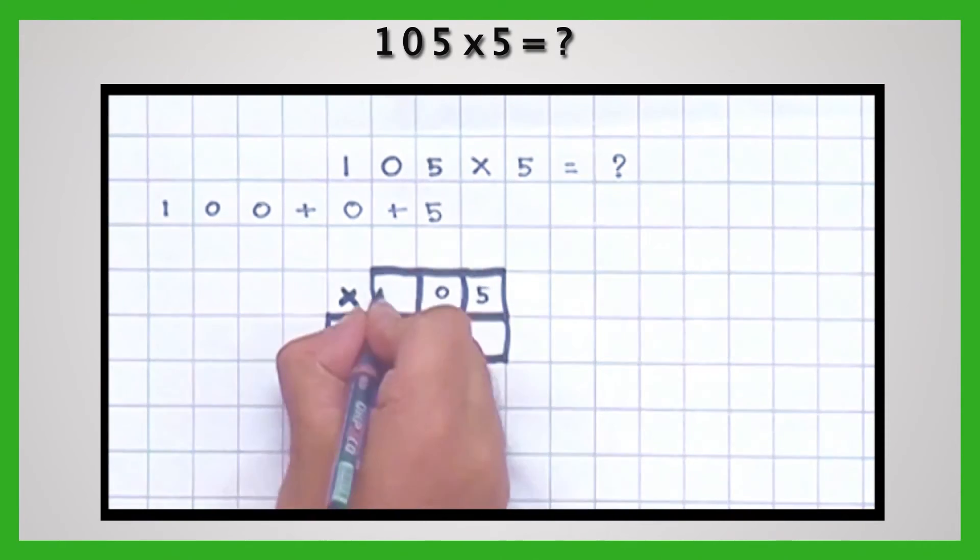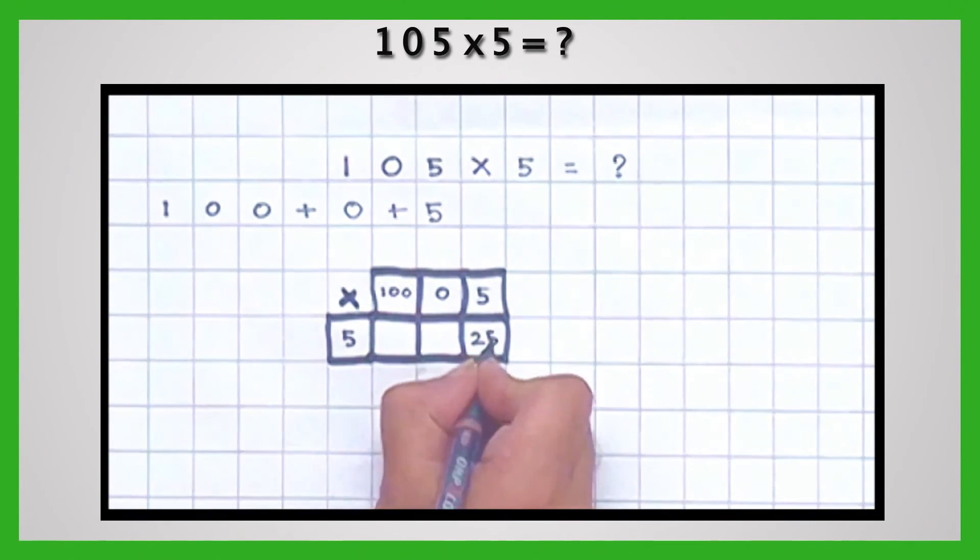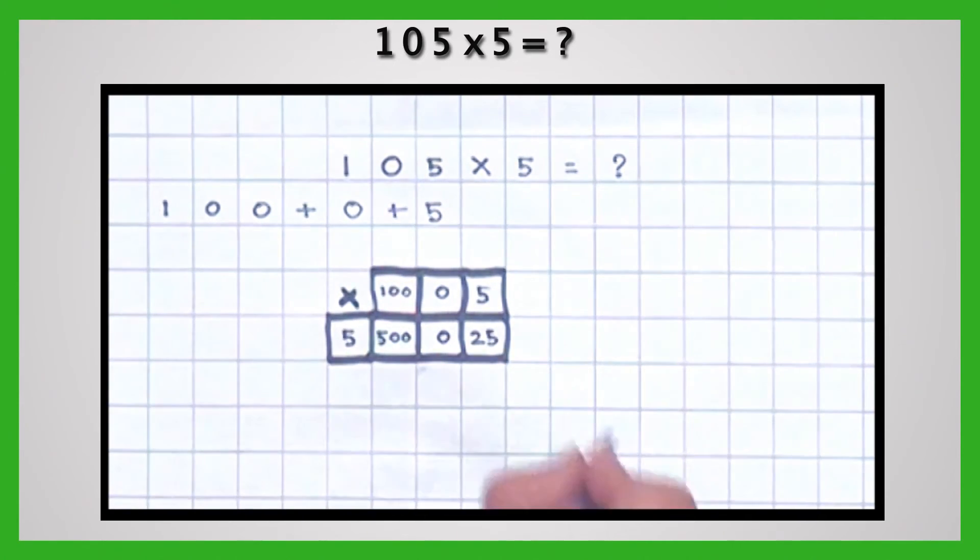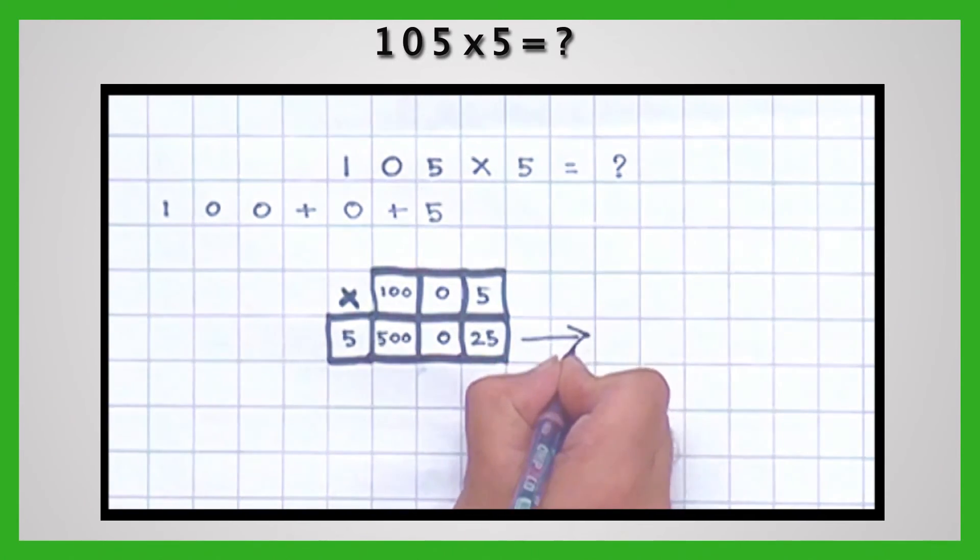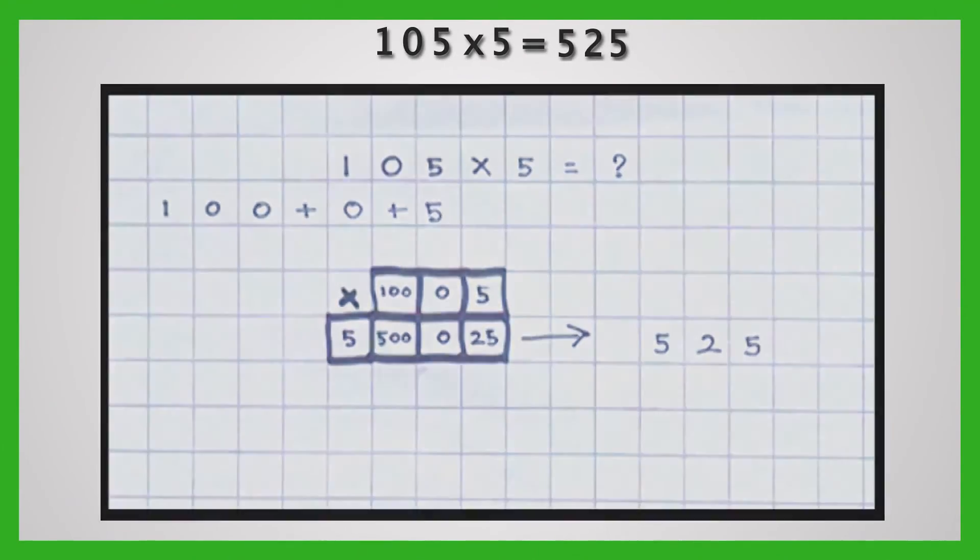Start multiplying by 5. 5 multiplied by 5 is 25. 5 multiplied by 0 is 0. And 5 multiplied by 100 is 500. On adding, we get the product 525.